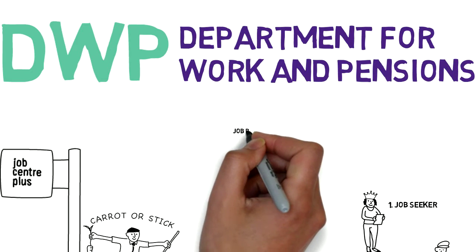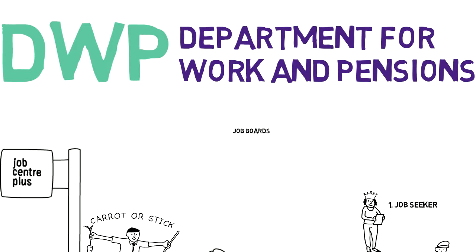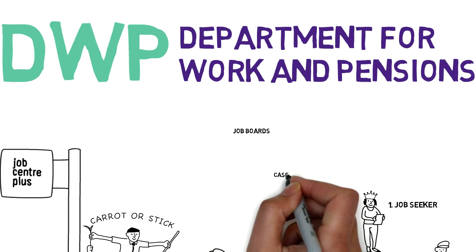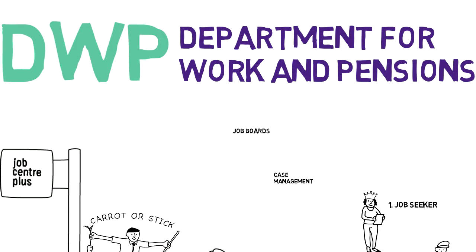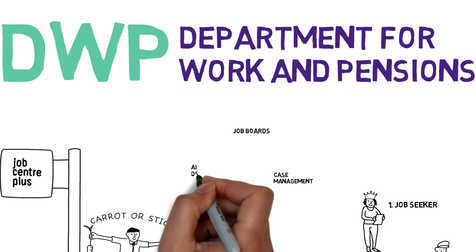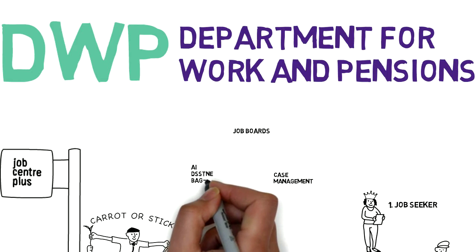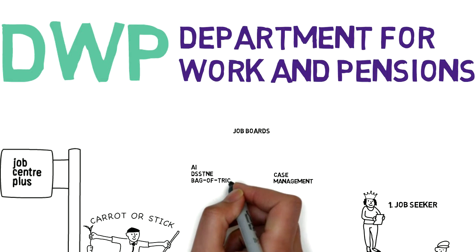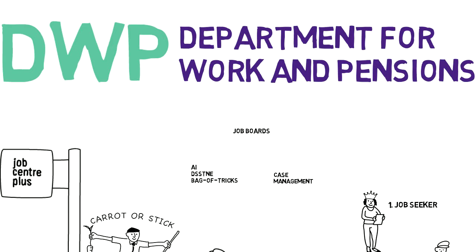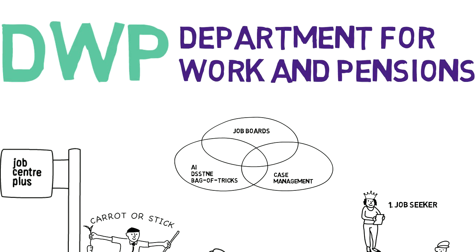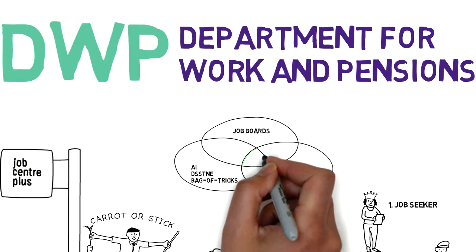How might these services then be delivered? Well, all the tools described are off the shelf commodity products. Job boards and case management tools are freely available. And as for artificial intelligence, Amazon's Destiny and Facebook's AI driven text classification system, Bag of Tricks, have both been made available to the public as open source products.